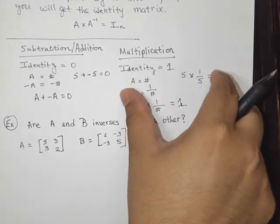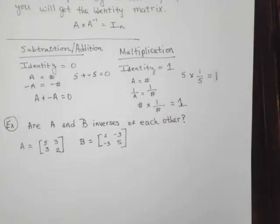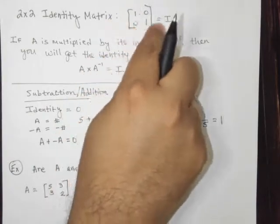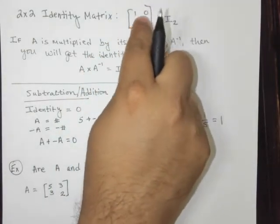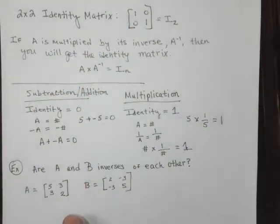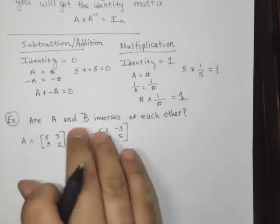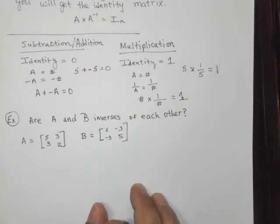Now when we take a look at matrices, again, we're going to set out to find the identity matrix, 1, 0, 0, 1 for the 2 by 2 case, to see, like in this example, if the two matrices are inverses of each other.